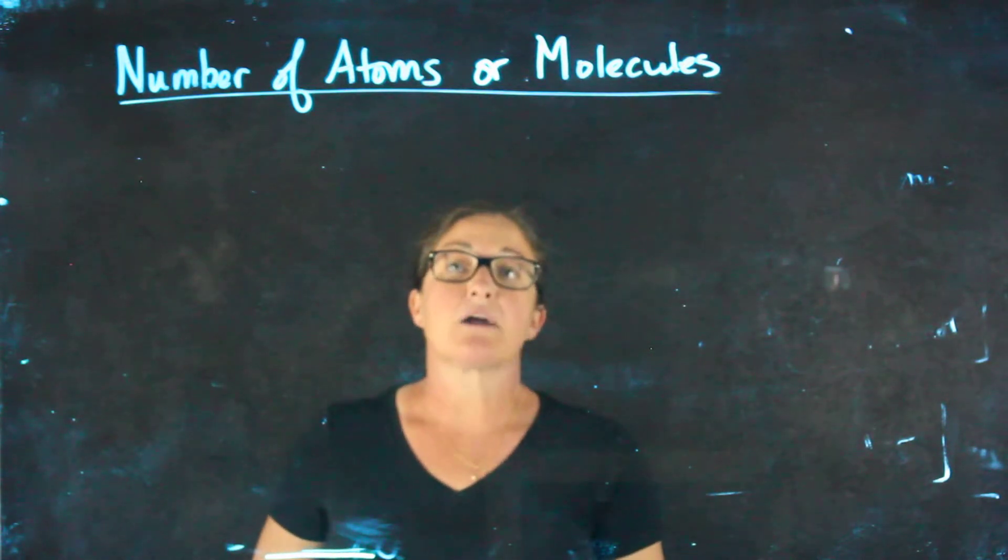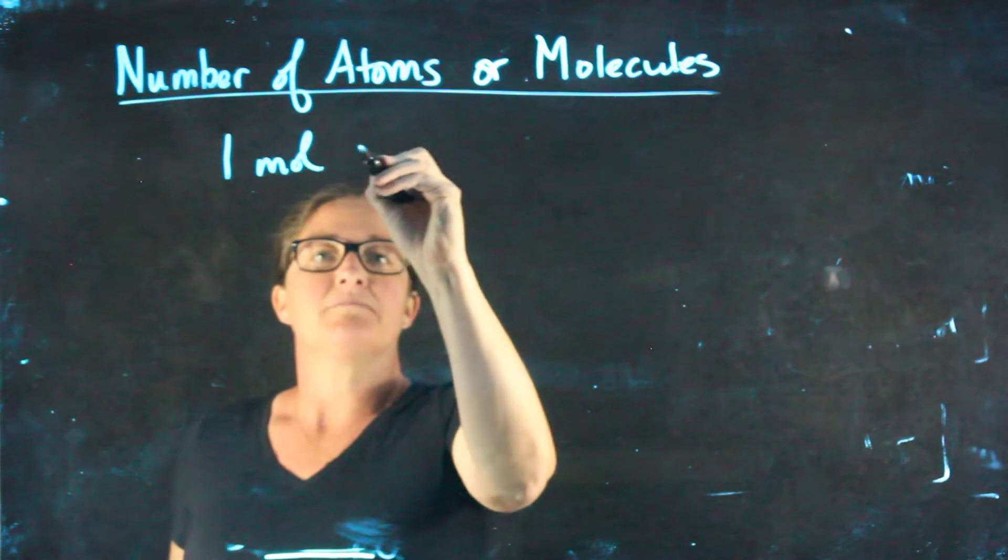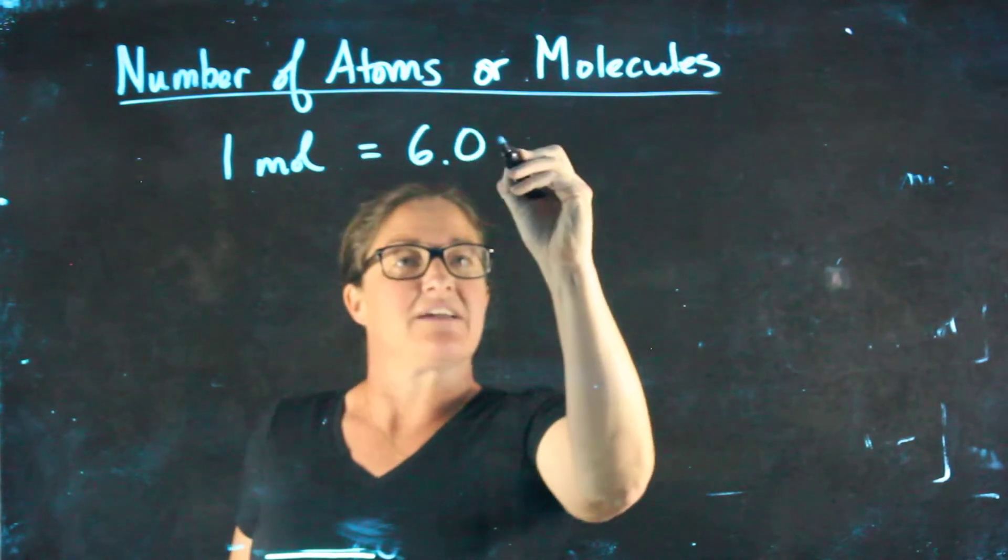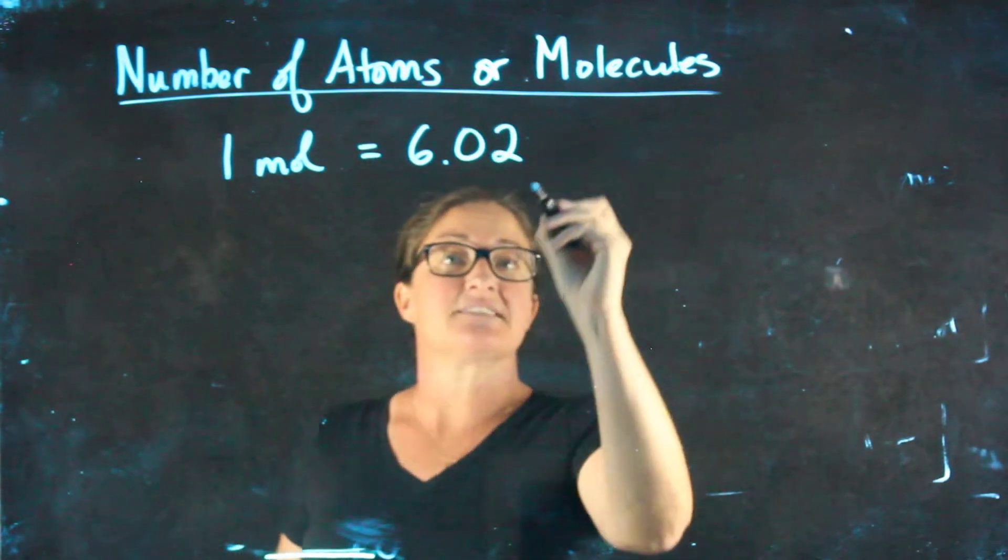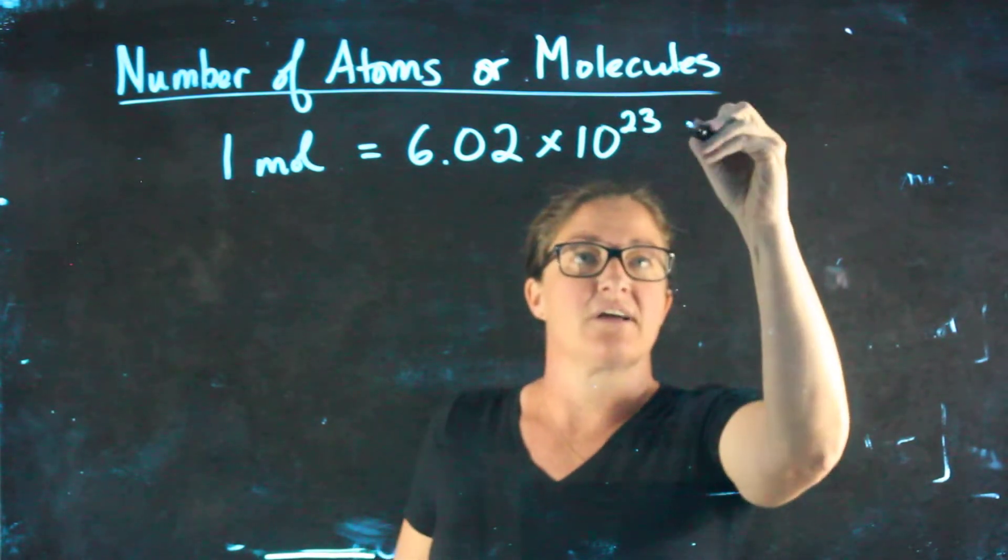Now is the part where we talk about what a mole really is. One mole is a whole lot of things. To be specific, it is exactly 6.02 times 10 to the 23rd things.